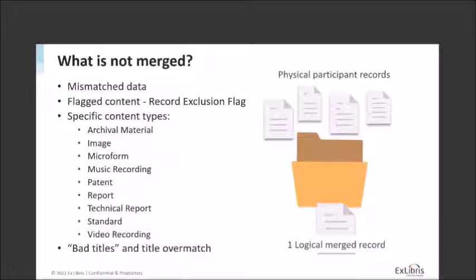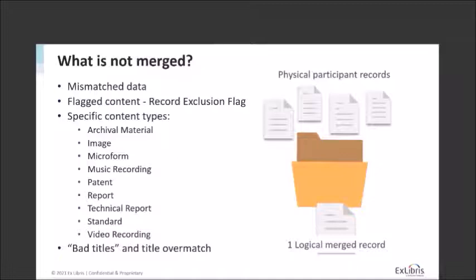What is NOT merged: mismatched data cannot be matched; flagged content where the content provider does not want their data merged; and certain content types that are difficult to correctly merge — archival material, images, microform, music recordings, patterns, etc. We also have filters for so-called bad titles and title overmatch, which applies to very short and common titles. For example, a title that exists 4,000 times in the index cannot be safely merged without additional criteria, because the danger that it's not the same record is too high.